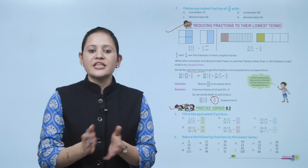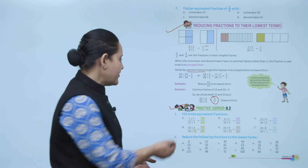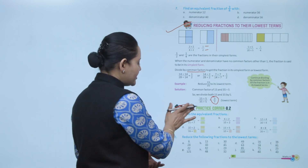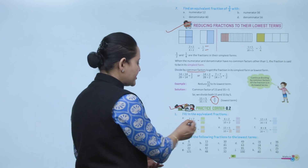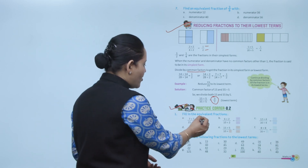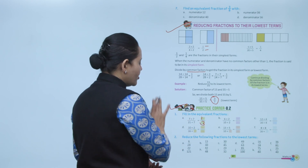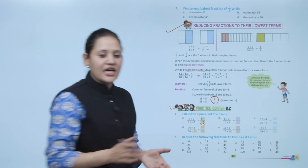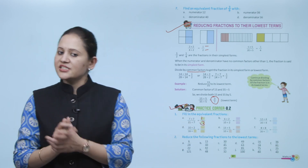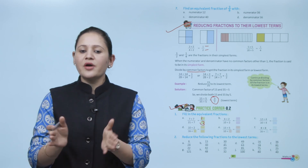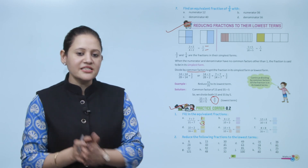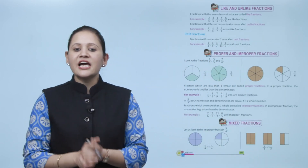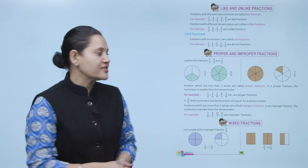Fill in the equivalent fraction: 7 upon 21 — divide both numerator and denominator by 7 to get 1 upon 3. So 7 upon 21 and 1 upon 3 are equivalent fractions. Practice all the questions of this exercise. Next is like and unlike fractions.